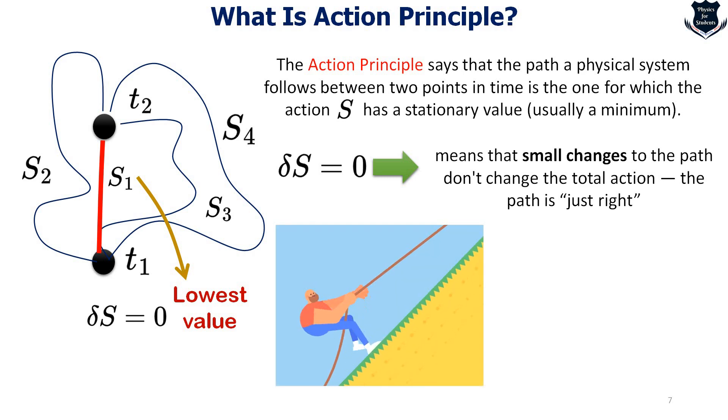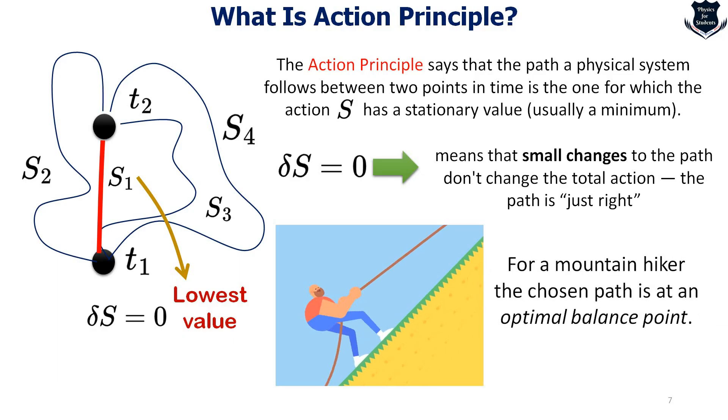For example, think of this mountain hiker climbing up the rope. They don't take the steepest or the flattest path. Instead they pick a route that balances effort, safety and the terrain. And remember it is not random, it is optimal. That is exactly what nature does through action principle. It chooses the path where the total action is just right. Small changes to the path make no difference. Mathematically we say that delta S equals zero, or which has got the optimal balance point. This is basically what is called the action principle.